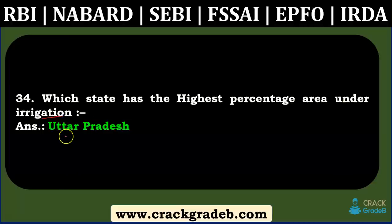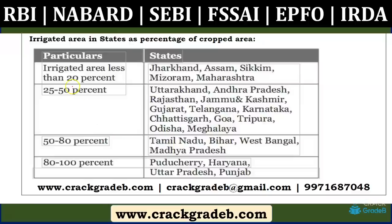Which state has the highest percentage area under irrigation? Uttar Pradesh. In General Agriculture, we have given irrigated area percentages by state: 80–100% — Haryana, Uttar Pradesh, Punjab; 50–80% — Tamil Nadu, Bihar. Based on the options provided, students can choose the right answer accordingly.